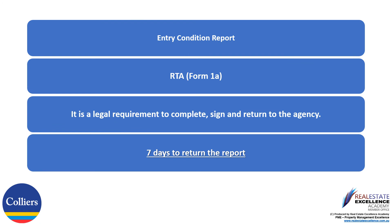The Form 1A is the Entry Condition Report. It is a legal requirement for you to complete, sign, and return the Form 1A to our agency within seven days of taking possession. You are given a copy of this Form 1A, completed and signed by our agency, on or before the day you take possession of the property — usually the day you collect the keys. During your legal time period to complete and return the Form 1A, if you have any questions or concerns, please contact our property manager, and then return the report within the seven days set out in the legislation.